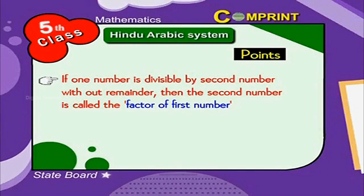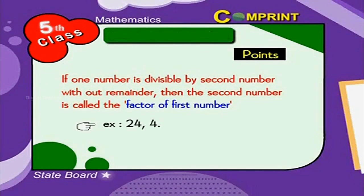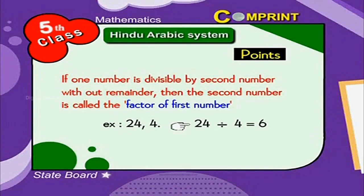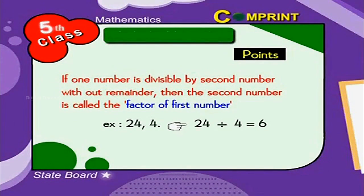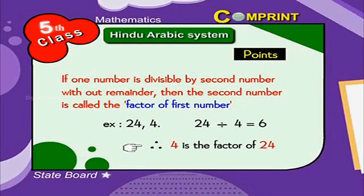For example, 24 and 4: 24 divided by 4 equals 6. Therefore, 4 is a factor of 24.